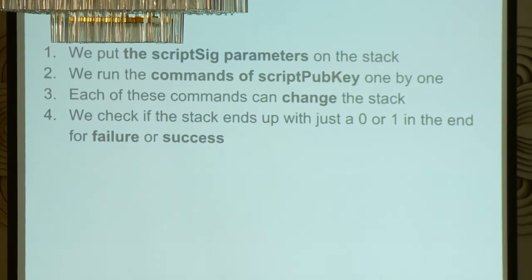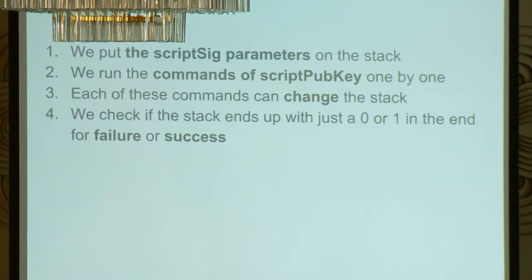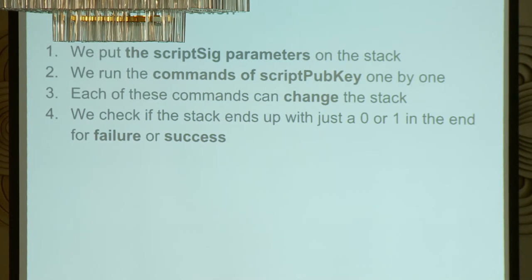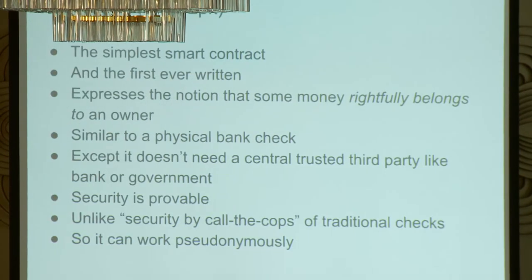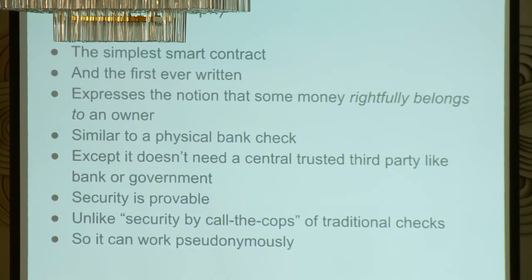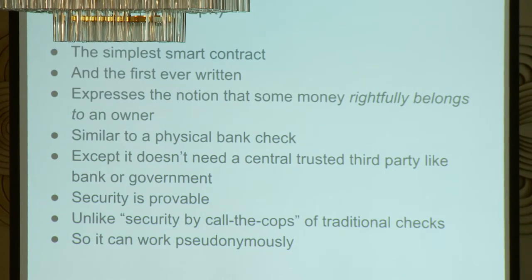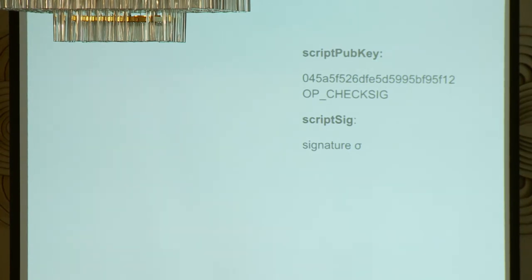Here's how it runs: first we take the ScriptSig that the attempted spender put into the network and push it onto the stack. Then we run the commands in ScriptPubKey one by one — each command can change the stack until the program either crashes or the stack has only one item that is a 1. If it's a 1, the amount was spent correctly. Pay-to-PubKey is the first way to spend money that Bitcoin invented — it allows you to express something like a bank note or check without a centralized trusted third party like a government or bank.